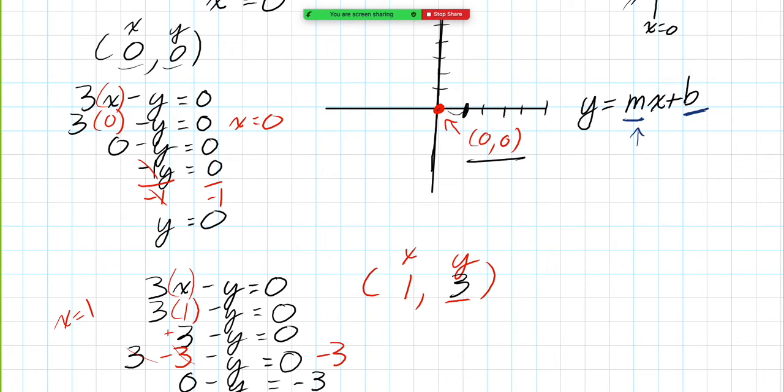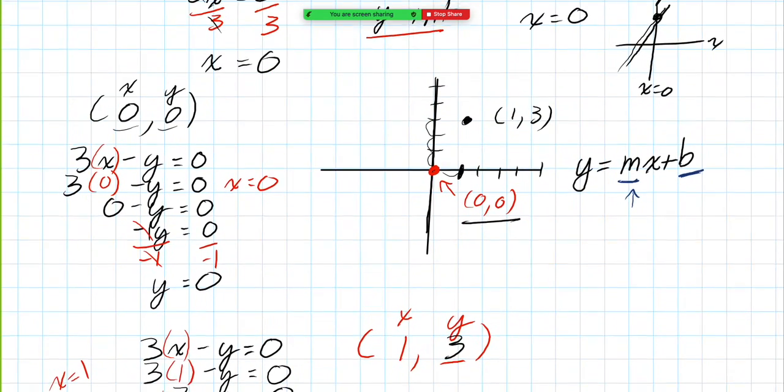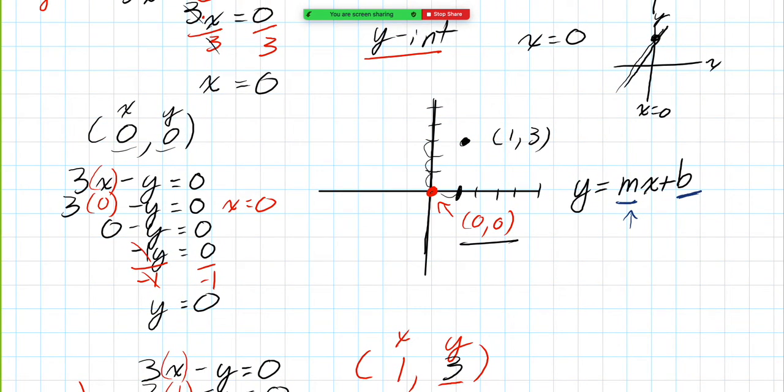When x is 1, so I go over 1, y is 3. So we'll do like a bingo here. 1, 2, 3. And the two things, they cross here. That's (1, 3). That's where that coordinate is. And like I said before, as long as we have two points, we can graph.